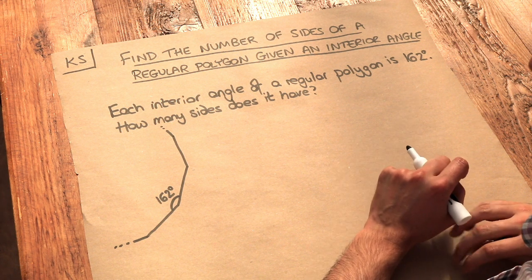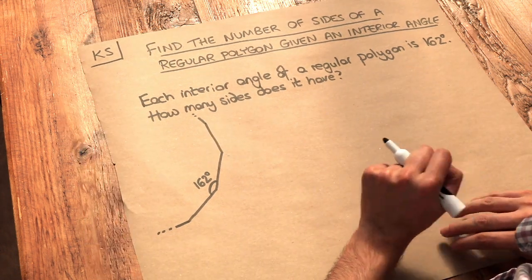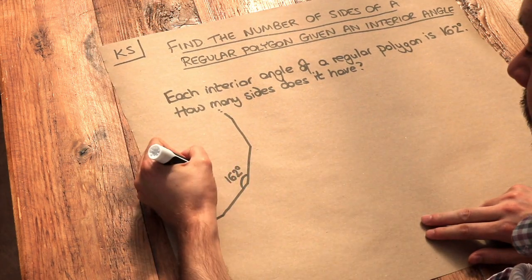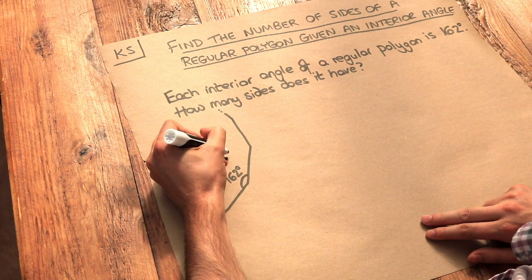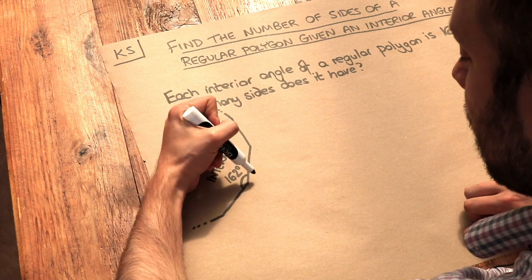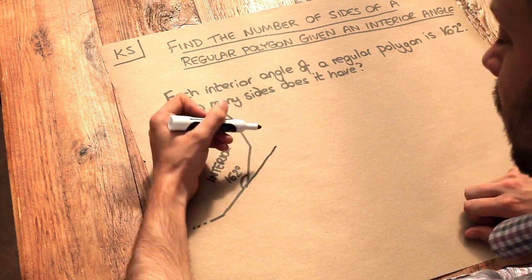Now the easiest thing to do here is to actually work out what the exterior angle of the polygon is first. So if we've got this interior angle here of 162 degrees, remember that the exterior angle of a polygon is when we extend out one of the sides.